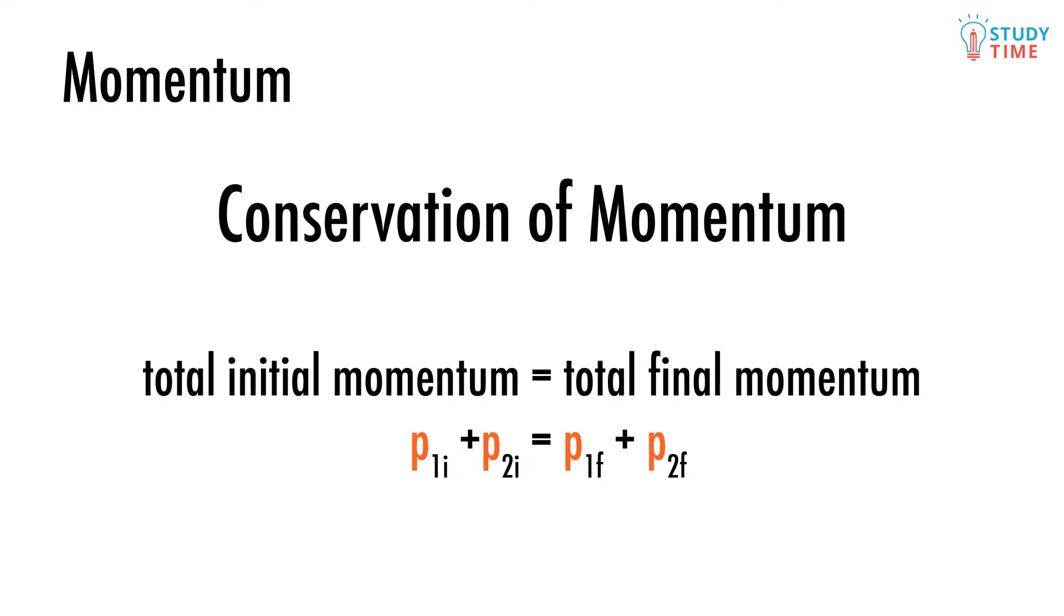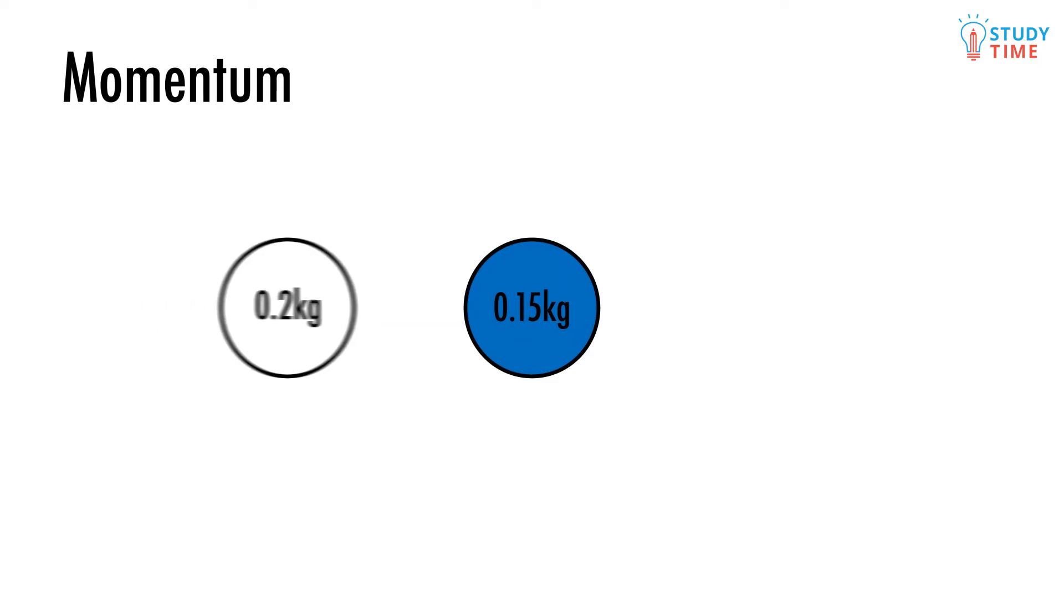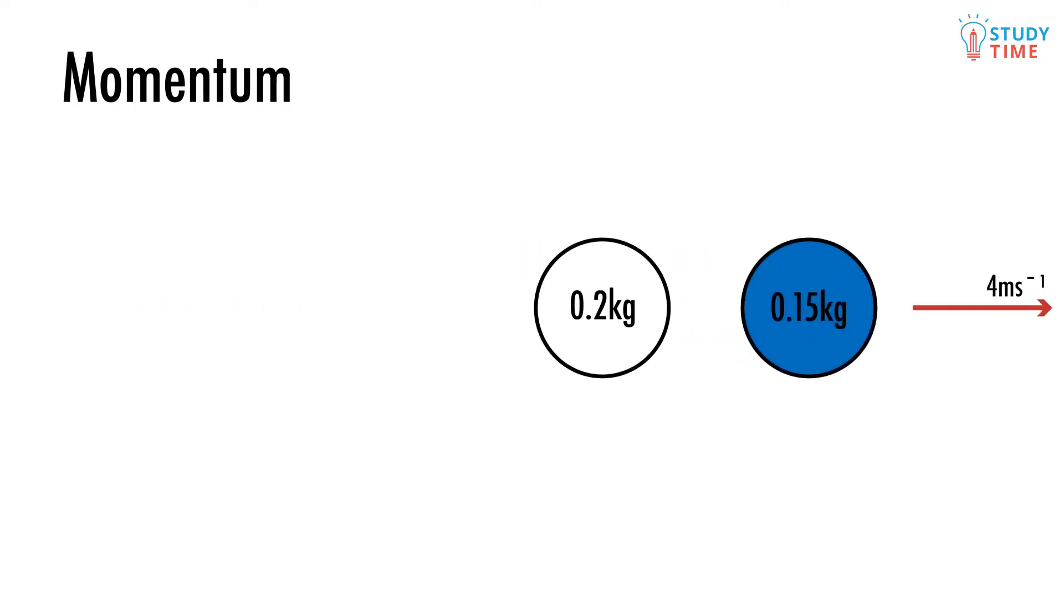On one particular shot, you hit the white ball, which weighs 0.2 kilograms, into the blue ball, which weighs 0.15 kilograms. The white ball is hit at a velocity of 6 meters per second. The two balls collide and the blue ball ends up traveling at 4 meters per second to the right.